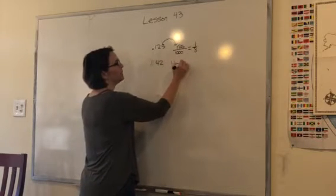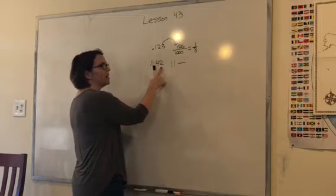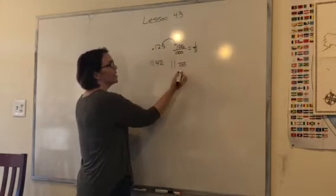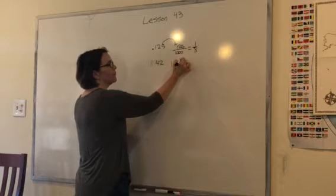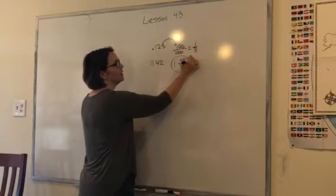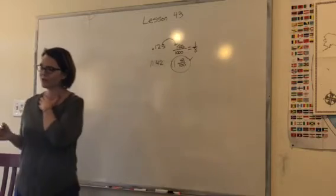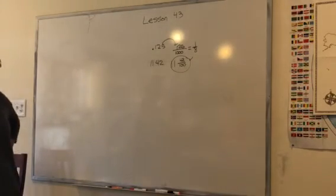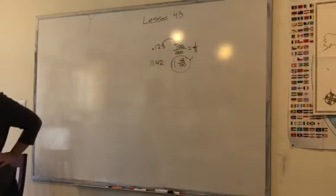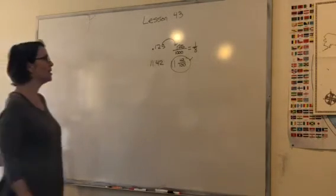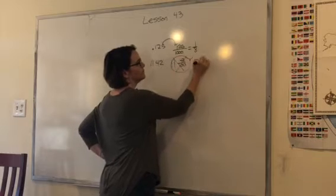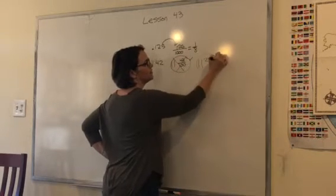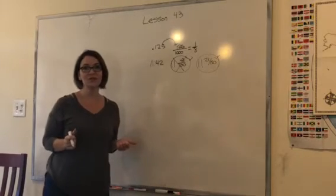Example 2. Write 11.42 as a mixed number. 11.42 as a mixed number. Well, that means that I've got some whole numbers and I've got a fraction. What is my whole number? 11. And then I'm going to have a fraction. What place is the last number sitting in? The hundredths. The hundredths place. So the hundred becomes my denominator. And what goes on top? 42. Very good, Jordan. Great job.